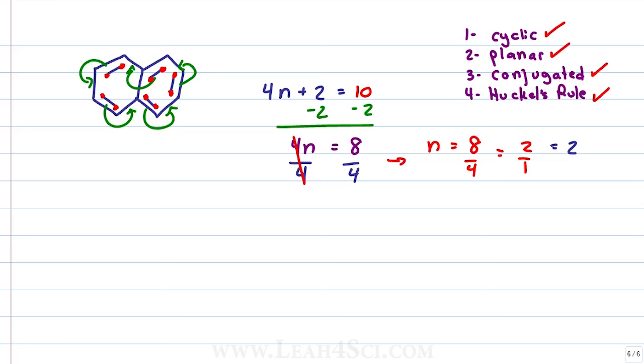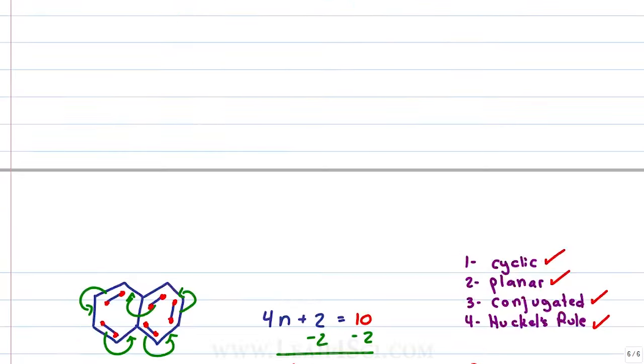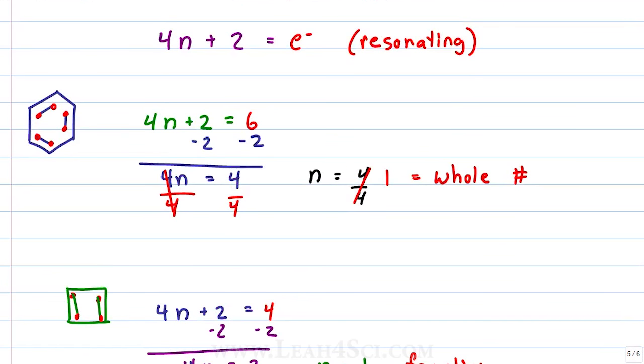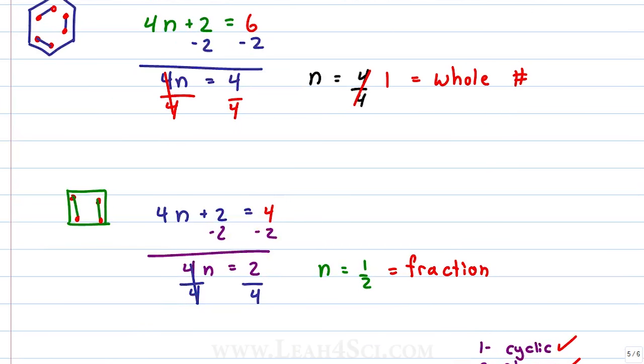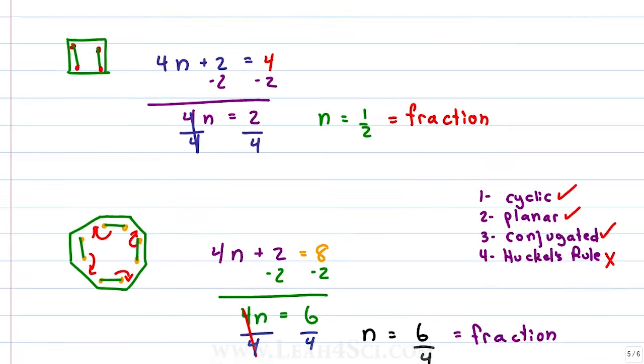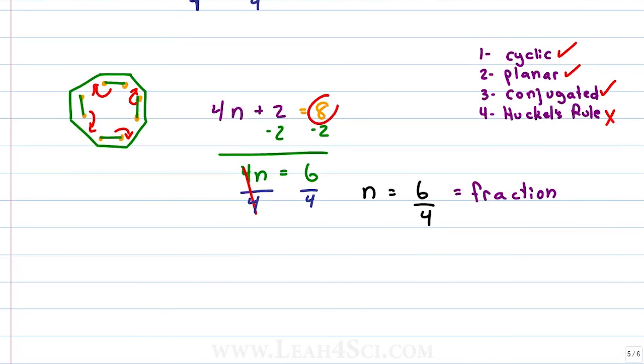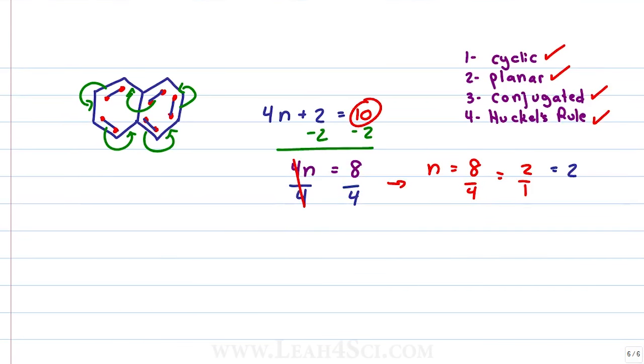Why did we go through all of these problems? Let's go back to all of this again. When we had 6 electrons, we got a whole number, it was aromatic. 4 electrons, not a whole number, anti-aromatic. 8 electrons, also fraction, anti-aromatic. 10 electrons, whole number, aromatic.